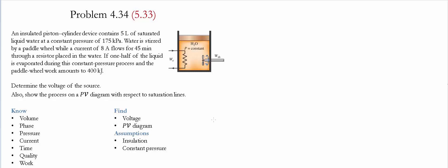Problem 4.34 or 5.33 for the given textbooks. In this problem, an insulated piston sealing device contains 5 liters of saturated liquid water at a constant pressure of 175 kPa. Water is stirred by a paddle wheel while a current of 8A flows for 45 minutes through a resistor placed in the water. If one half of the liquid is evaporated during this constant pressure process and the paddle wheel work amounts to 400 kJ, we need to determine the voltage of the source and show the process on a PV diagram with respect to the saturation lines.